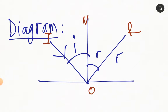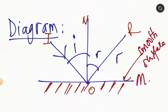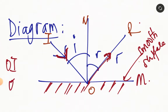In this diagram we see a plane mirror. OM represents our plane mirror — this side represents the rough surface and this side represents the smooth surface. A ray of light falling on the mirror is called the incident ray; OI represents our incident ray. The incident ray is pushed back, forming what we call the reflected ray. Then we have a line separating the incident ray and the reflected ray — that line is called the normal, represented by ON.